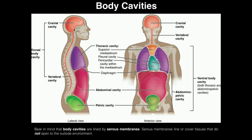We also have a vertebral cavity, which is basically a cavity that runs through the spine. Down here we have the pelvic cavity, and in pink is the abdominal cavity. Sometimes you'll see the abdominal cavity and pelvic cavity combined into one term called the abdominal pelvic cavity, but understand this is a conglomerate of those two individual cavities — abdominal and pelvic.